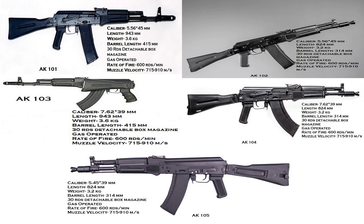Now let's talk about the individual characteristics of the AK-100 series. The caliber of the AK-101 and AK-102 is 5.56×45mm. The AK-103 and AK-104 have a caliber of 7.62×39mm, and the AK-105 has a caliber of 5.45×39mm. The overall length of the AK-101 and AK-103 is 943mm, while the AK-102, AK-104, and AK-105 have an overall length of 824mm.